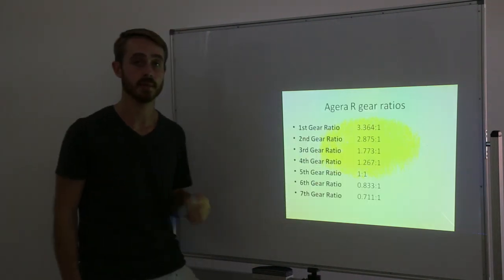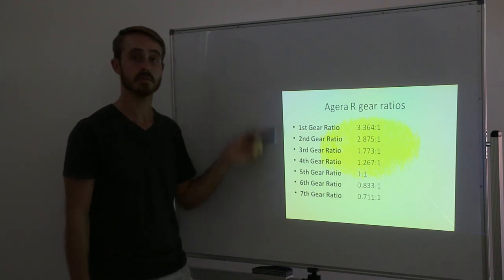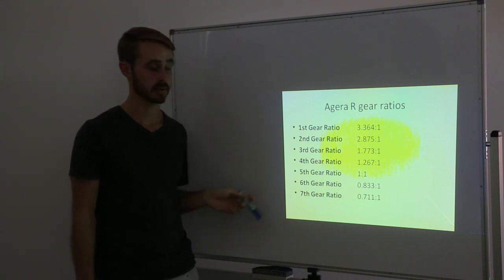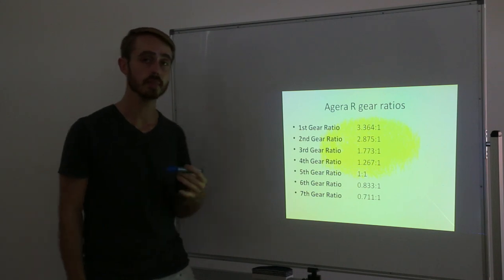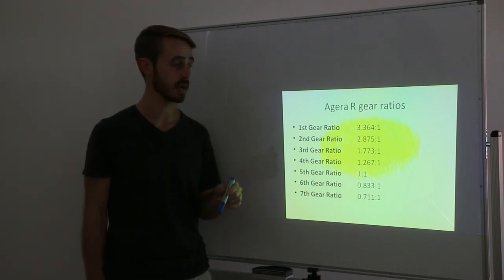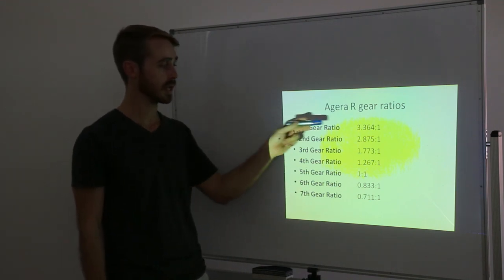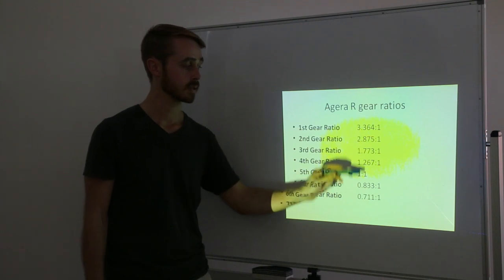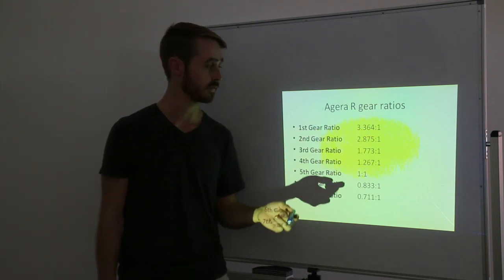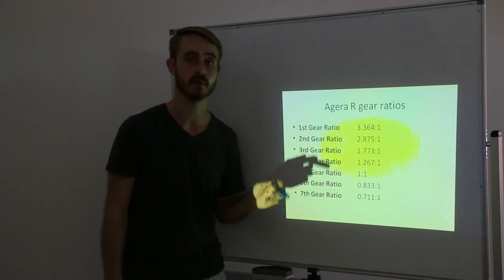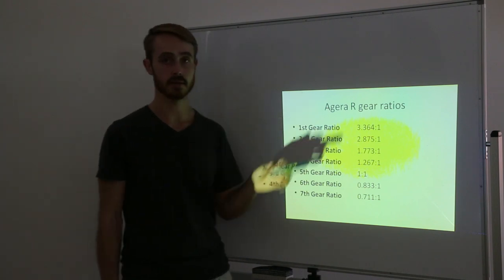Looking at the Agera R, the other hypercar produced by Koenigsegg, it has a 7 speed gearbox with the following ratios. I couldn't find too much information on the final drive ratio, but the general number I could get was 3.4, which is quite reasonable. So if we consider at each one of these speeds, we multiply this number by 3.4, and that gives us our effective ratio at the end of the final drive.